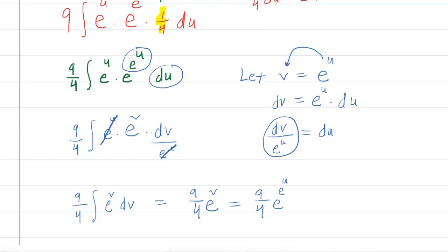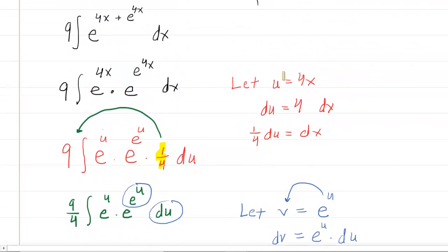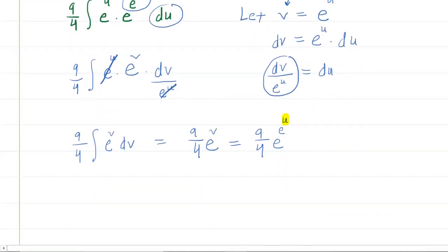We're not done yet because remember the original variable was not u. The original variable was x. But don't worry, u was equal to 4x. That was the original substitution we made. So all we need to do to finish this off is replace this u right here with 4x. So finally we have 9 fourths e raised to the e, which itself is raised to the 4x.